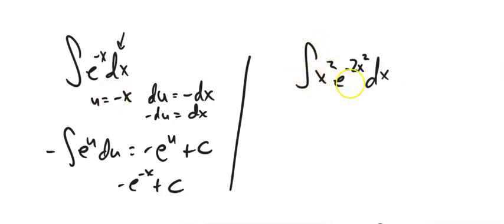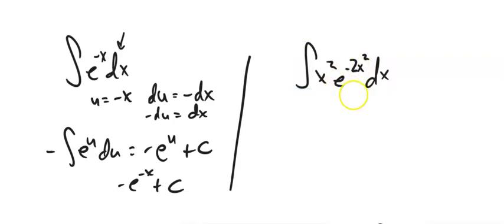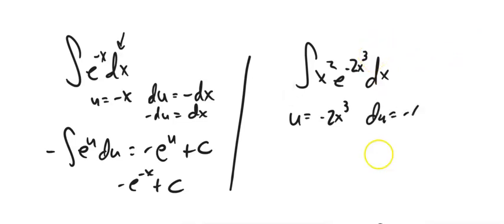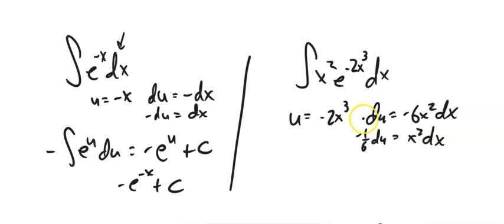I've got the integral of x squared times e to the negative 2x cubed dx. For all these substitutions, we want to look for what we could plug in — e to some power — let's take advantage of that. So let's let u equal negative 2x cubed. The derivative of that would be negative 6x squared dx. I notice we have our x squared, but we're negative 6 too big. So I'm going to multiply both sides by negative 1/6, and now I have a nice straight substitution: negative 1/6 e to the u du.